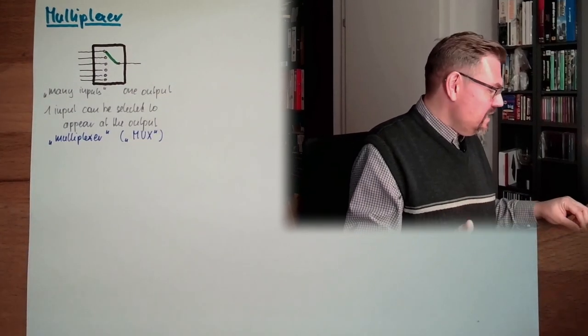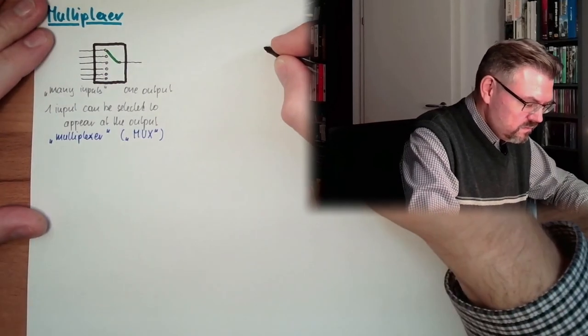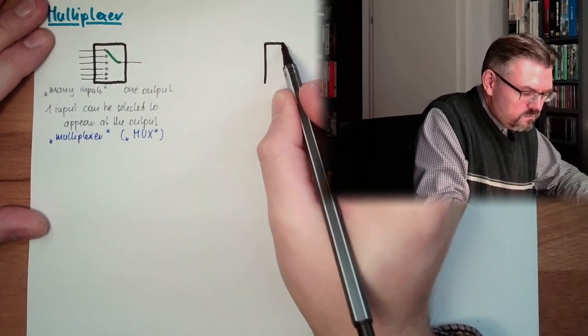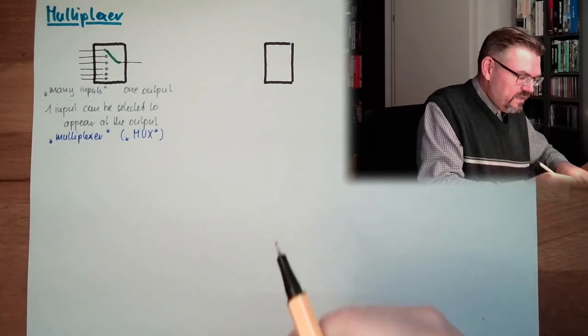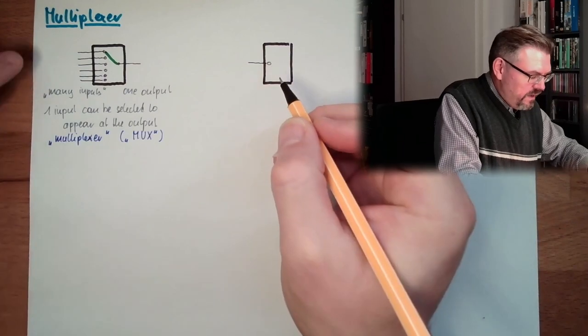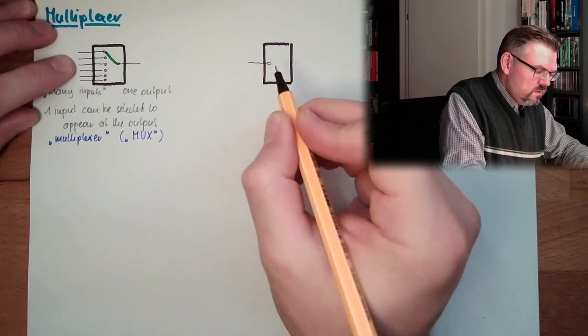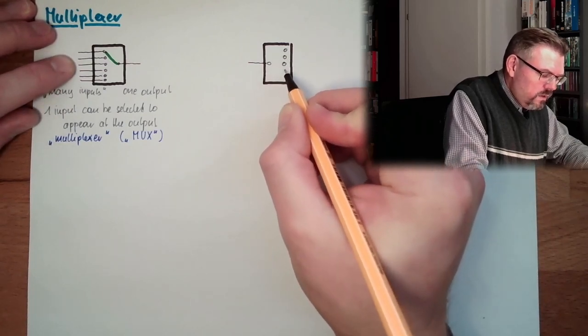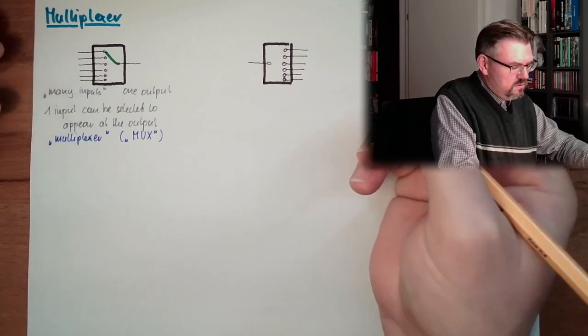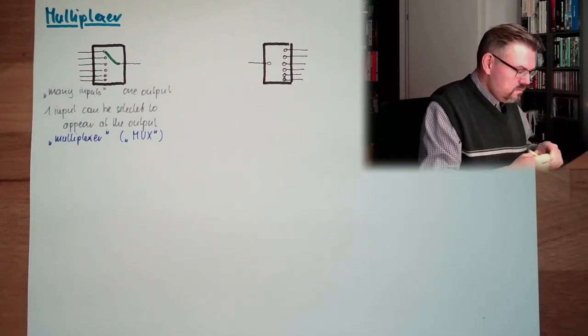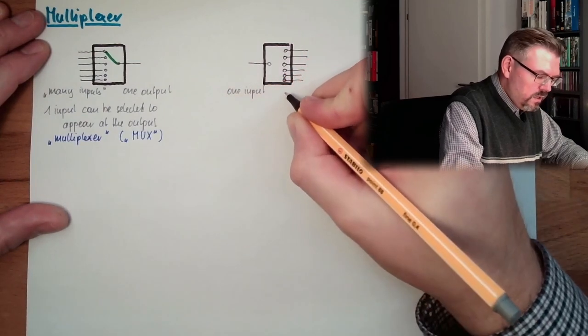What is this good for? Somewhere, at another point, I have a different element. And this different element has exactly one input. And how many outputs? Exactly the same amount. One, two, three, four, five, six outputs. Many outputs. One input.